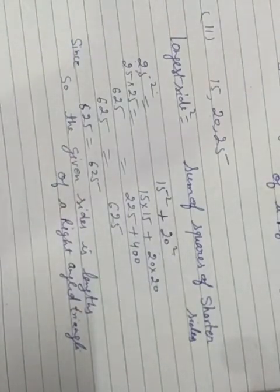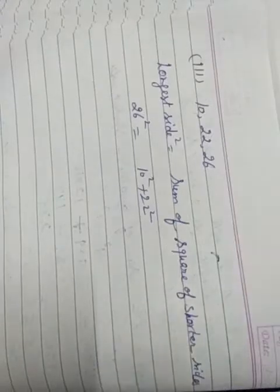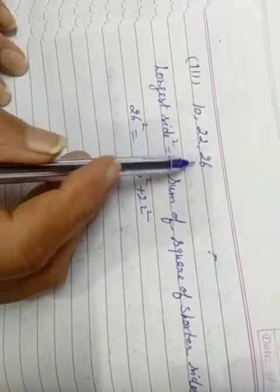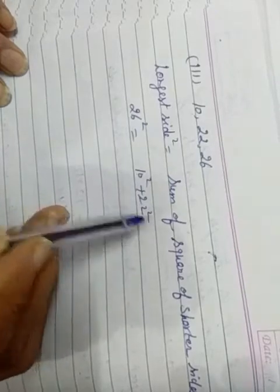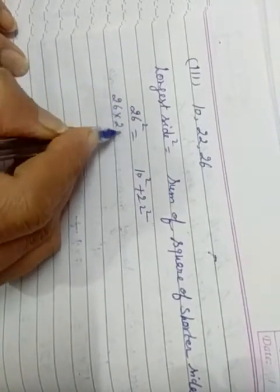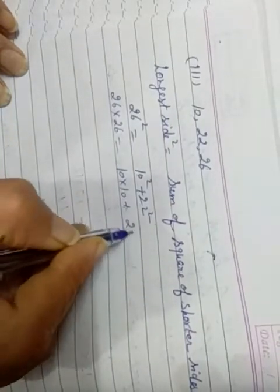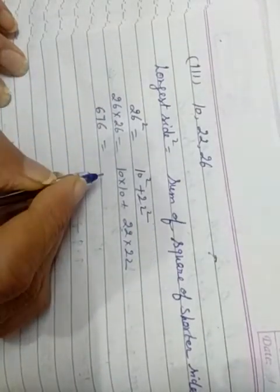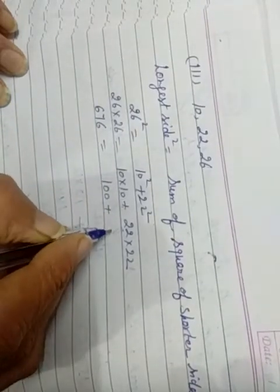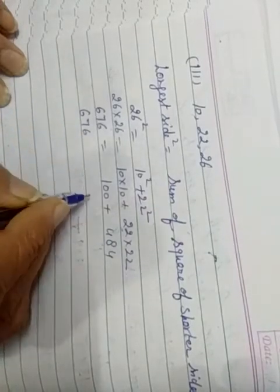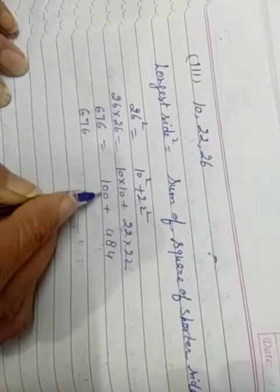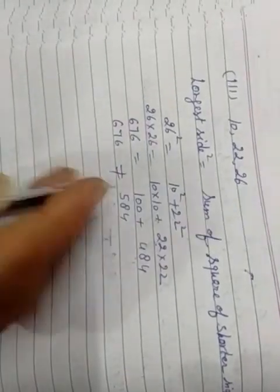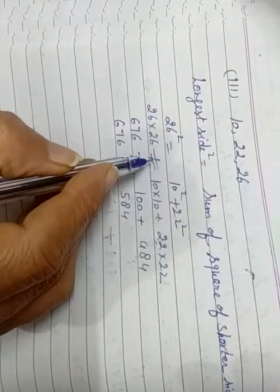Now third part: 10, 22, 26. Longest side square equals sum of square of shorter sides. 26 square equals 10 square plus 22 square. 26 into 26... 10 into 10 plus 22 into 22. 26 into 26 is 676. 10 times 10 is 100, 22 multiply by 22 we get 484. When we add this, we get 584. 676 is not equal to 584.